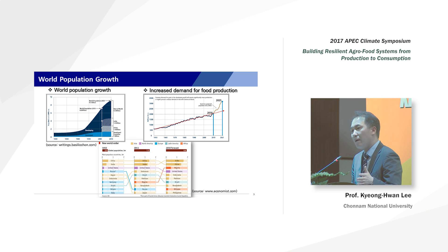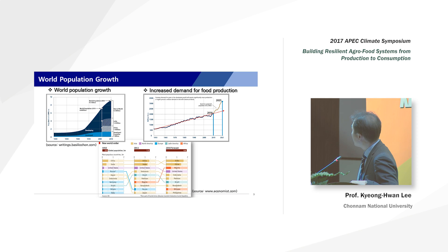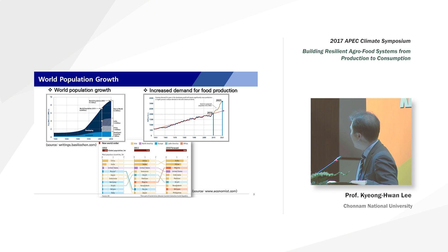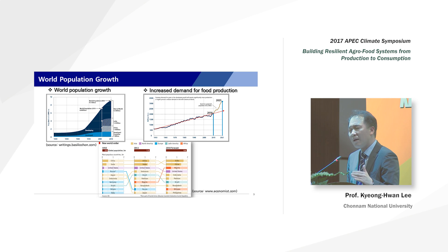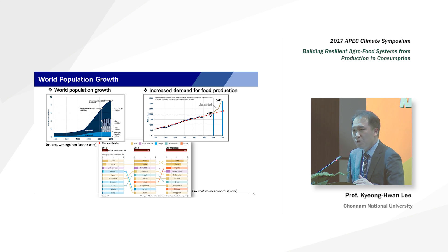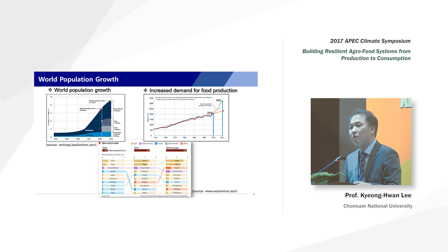In these countries, agriculture will become more and more important. This figure shows the amount of food production required. This line shows how much food production has increased. If we use the current agriculture production systems, production will follow this line. But this other line shows the amount of food actually required in the future. There are big gaps, meaning the current agriculture production system may not be enough for future society.